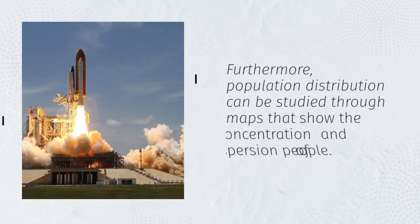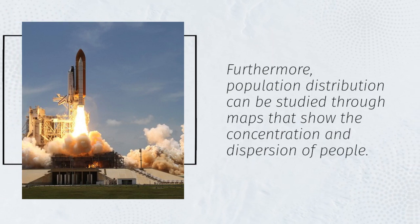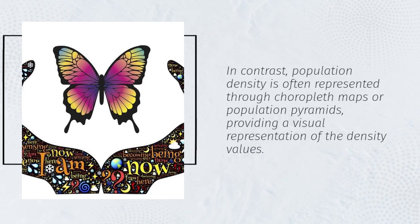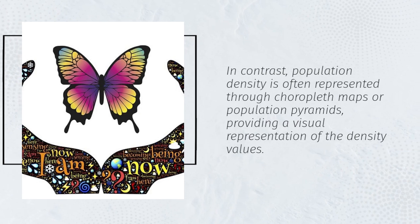Furthermore, population distribution can be studied through maps that show the concentration and dispersion of people. In contrast, population density is often represented through choropleth maps or population pyramids, providing a visual representation of the density values.